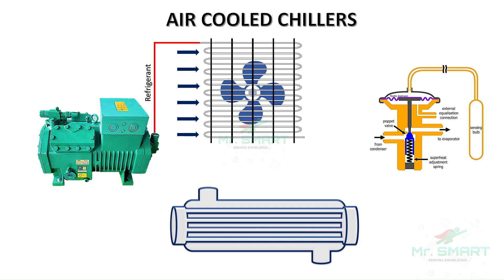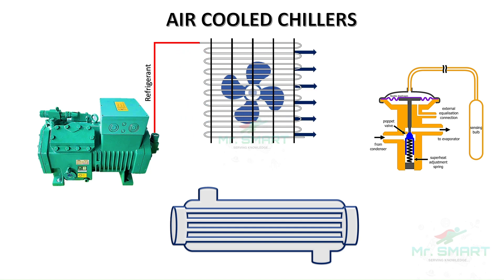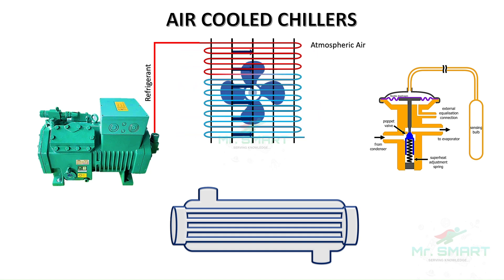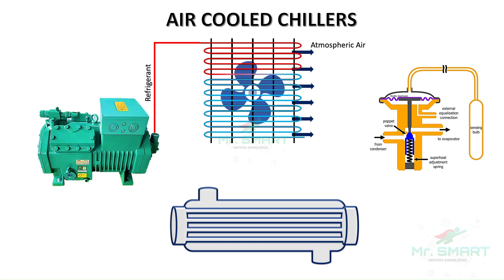During operation, the low-pressure refrigerant is compressed into a high-pressure, high-temperature refrigerant by the compressor and passed through the condenser. At the condenser, the high-pressure refrigerant releases heat to the surrounding air, cooling down and condensing into a high-pressure liquid. In an air-cooled chiller, fans help move ambient atmospheric air over the condenser coils to dissipate heat.